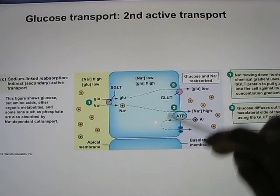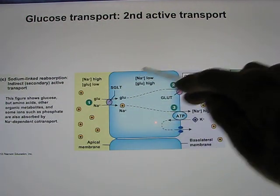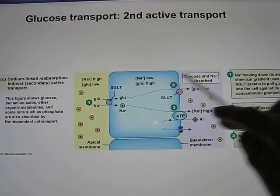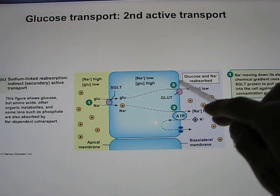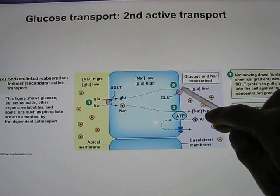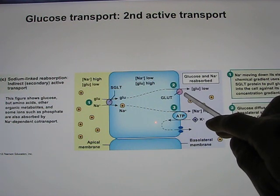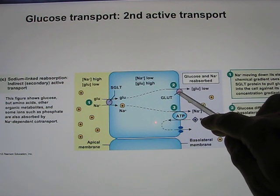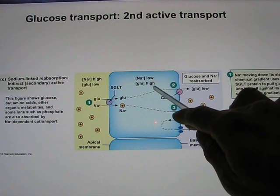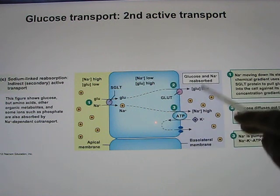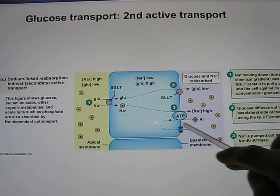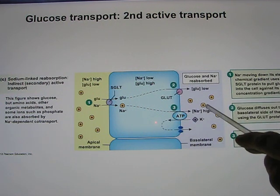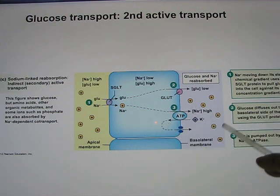Once glucose is inside the cell, it moves from high to low on the basolateral side, so we place a glucose carrier there to facilitate facilitated diffusion. The sodium-potassium pump is also placed on the basolateral membrane to continuously pump sodium out and maintain the sodium concentration gradient.